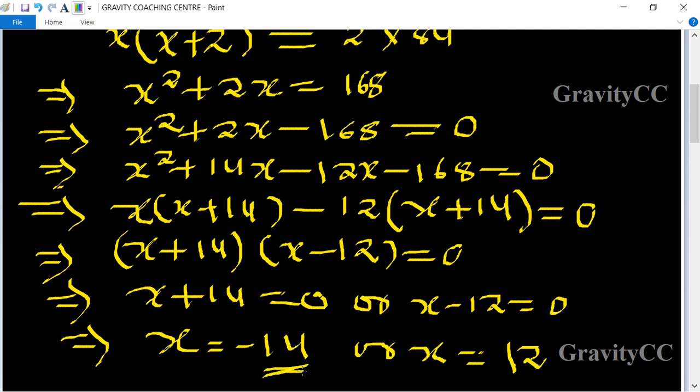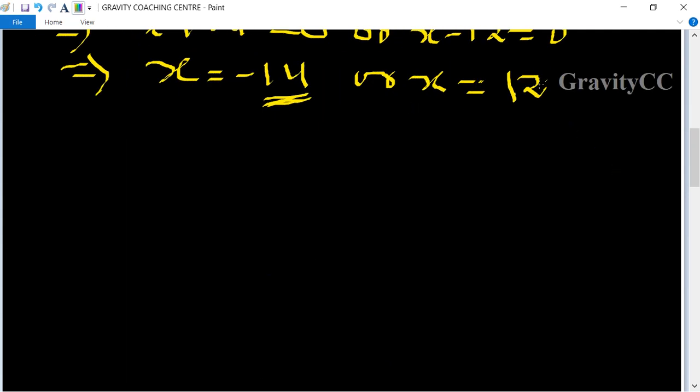Here x is negative, so we can't take minus 14 because both the numbers are positive. So the first number is 12, then the other one is x plus 2 equals 12 plus 2 equals 14.